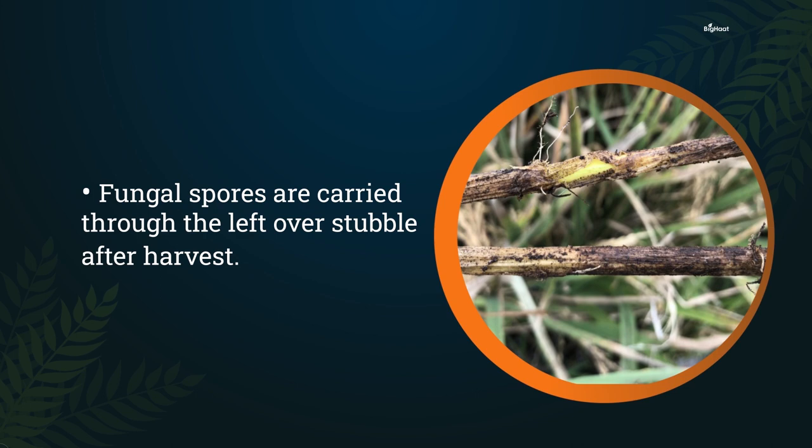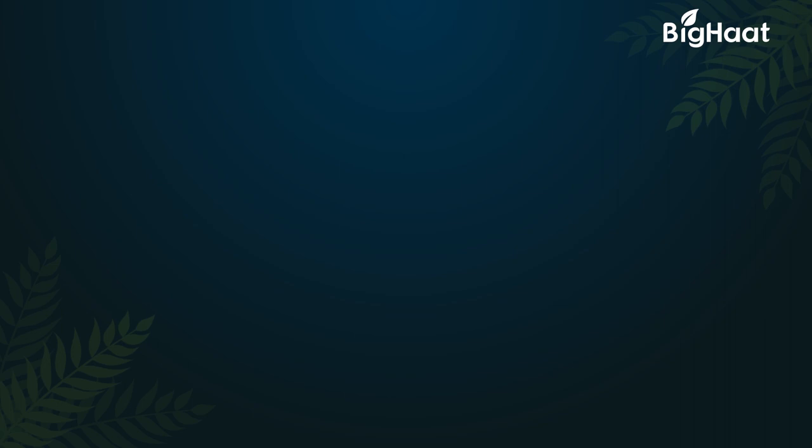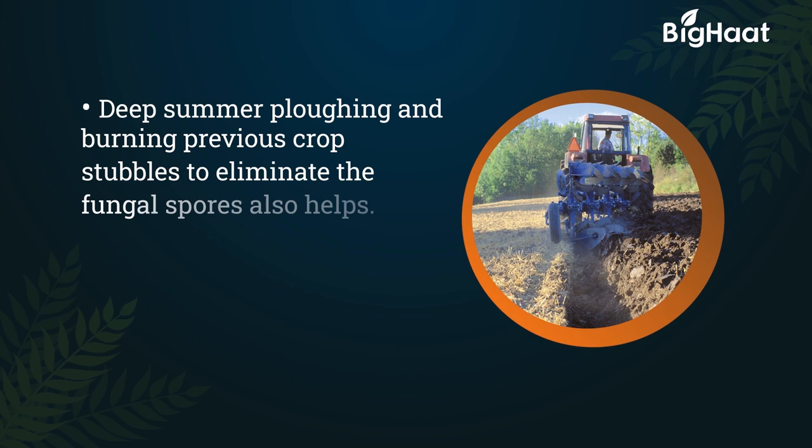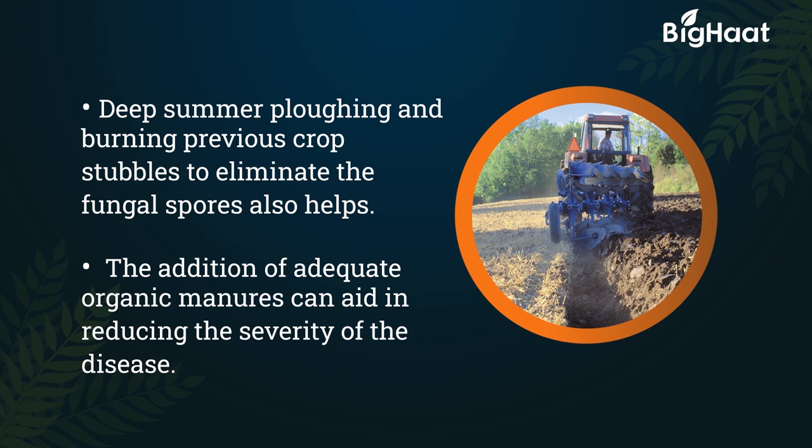Fungal spores are carried through leftover stubble after harvest. Apply only the necessary amount of nitrogen fertilizer, drain the water, and allow the soil to dry during the flowering and later stages of the crop. Deep summer plowing and burning previous crop stubble helps to eliminate the fungal spores.